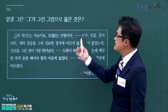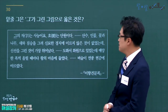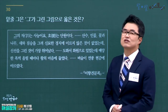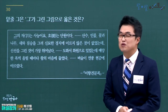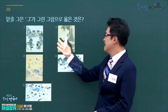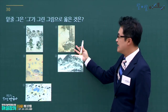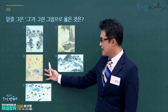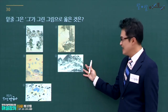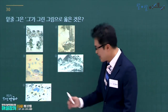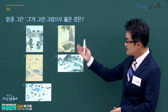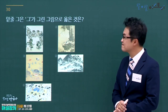호가 단원인 화가는 김홍도입니다. 김홍도가 그린 그림을 고릅니다. 강희안의 고사관수도, 신사임당의 초충도, 정선의 인왕제색도, 신윤복의 그림과 구별하여 김홍도의 풍속화가 정답입니다. 정답은 1번입니다.